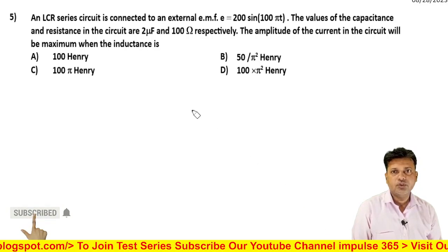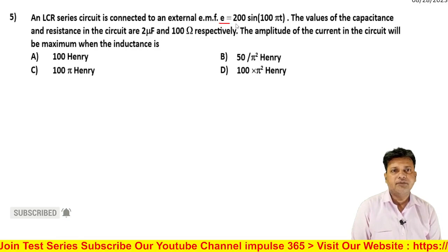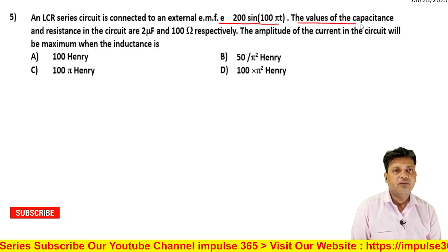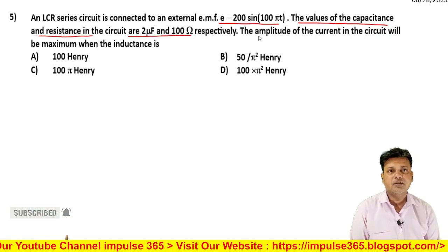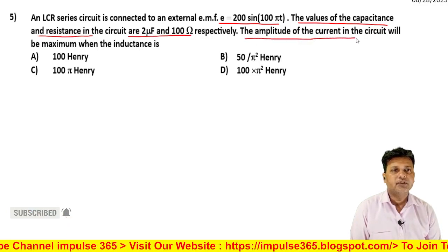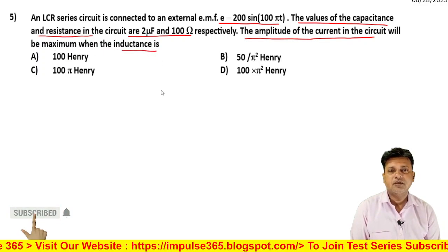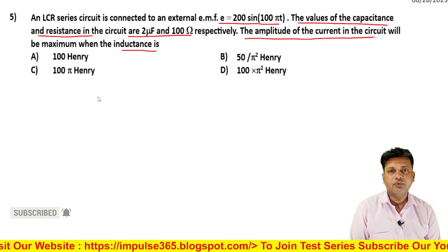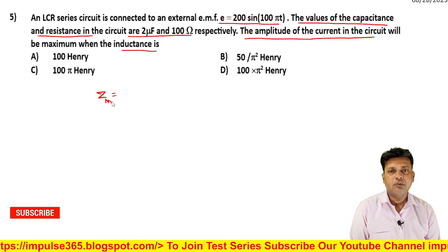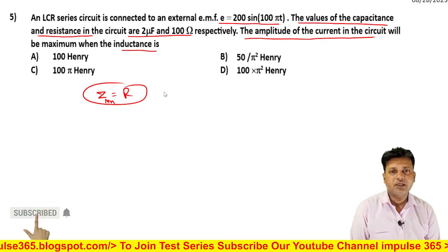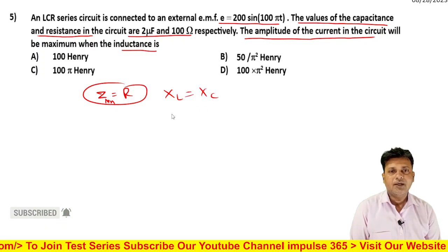So next question. An LCR series circuit is connected to an external EMF e = 200 sin(100ωt). The values of the capacitance and resistance in the circuit are 2μF and 100Ω respectively. The amplitude of the current in the circuit will be maximum when the inductance is... Maximum current occurs at resonance when impedance Z is minimum, where Z equals R. This condition happens when XL = XC.